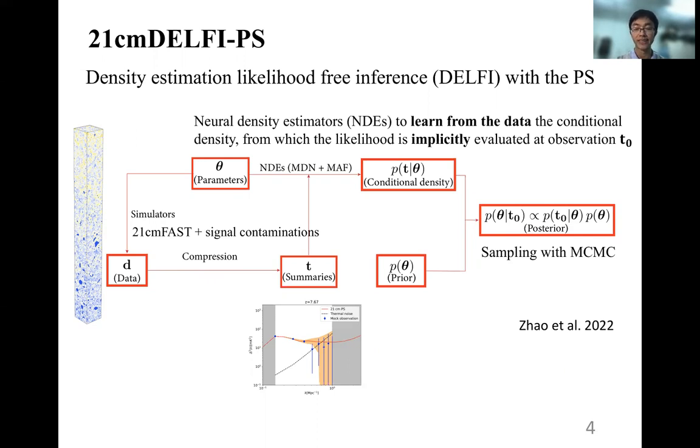And next, we compress the data into low-dimension summaries, which is the power spectrum in this work. Now we have the parameters and the data, and here is how DELFI kicks in. Basically, DELFI uses neural density estimators, or NDEs for short, to learn from the data the conditional density, from which the likelihood is implicitly evaluated at observations. And the likelihood combining with the parameter prior will enable us to get the parameter posterior, which could be sampled with MCMC. In this way, we do not rely on an explicit likelihood function and only evaluate the likelihood from the trained neural density estimators. For the details of DELFI and the neural density estimators, please refer to our previous papers, Zhao et al. 2022.